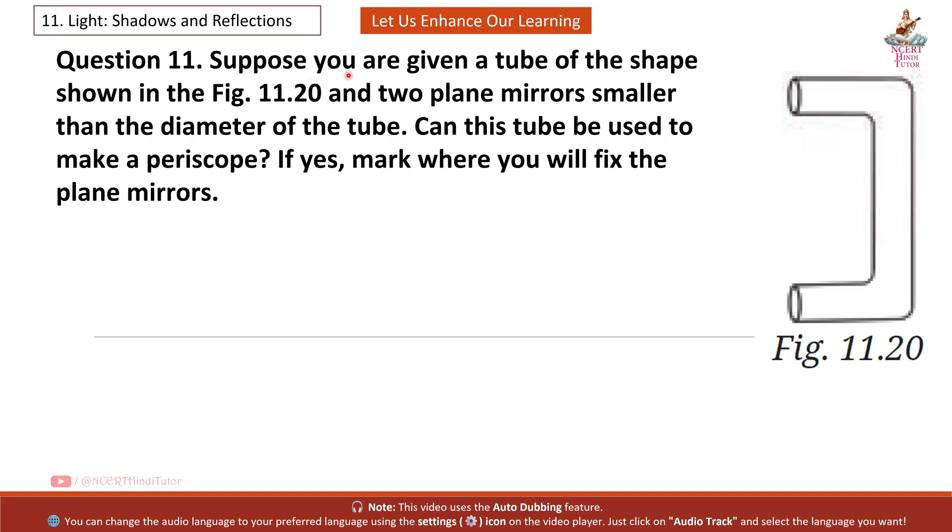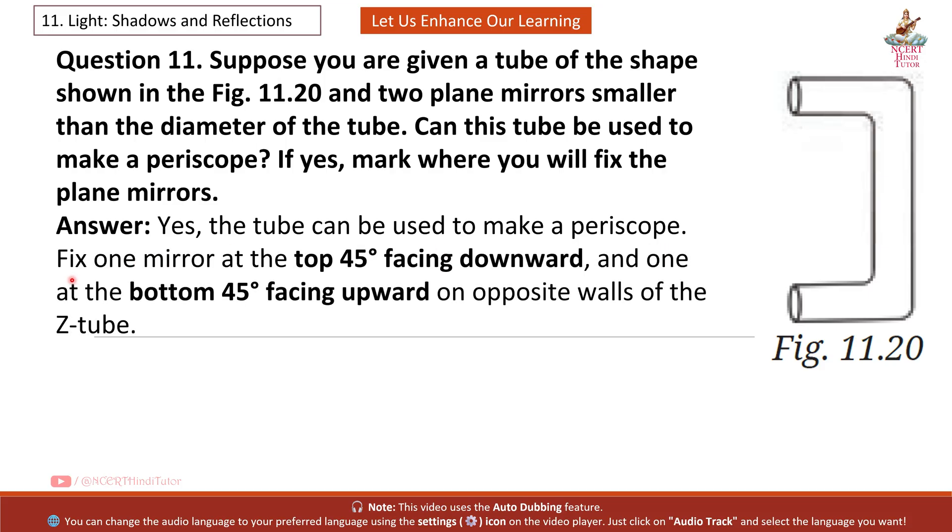Question 11: Suppose you are given a tube of the shape shown in the figure 11.20 and two plain mirrors smaller than the diameter of the tube. Can this tube be used to make a periscope? If yes, mark where you will fix the plain mirrors. Answer: Yes. The tube can be used to make a periscope. Fix one mirror at the top, 45 degree facing downward here. And one at the bottom, 45 degree facing upward on opposite walls of the Z tube. So second mirror comes here. This way, light reflects twice and reaches the eye. First reflection here and second reflection here.